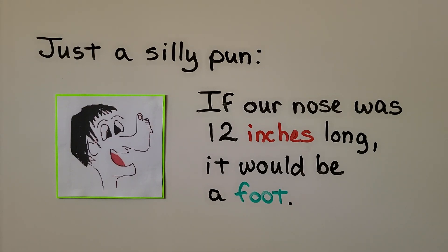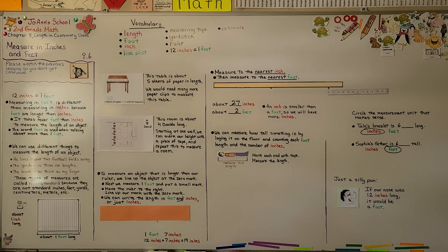Let's end the lesson with a silly pun: if our nose was 12 inches long, it would be a foot. Our next lesson, 8.7, we're going to estimate lengths in feet. That means we're going to estimate about how many feet long we think objects are. Have a wonderful day, I hope you're doing well. Bye.